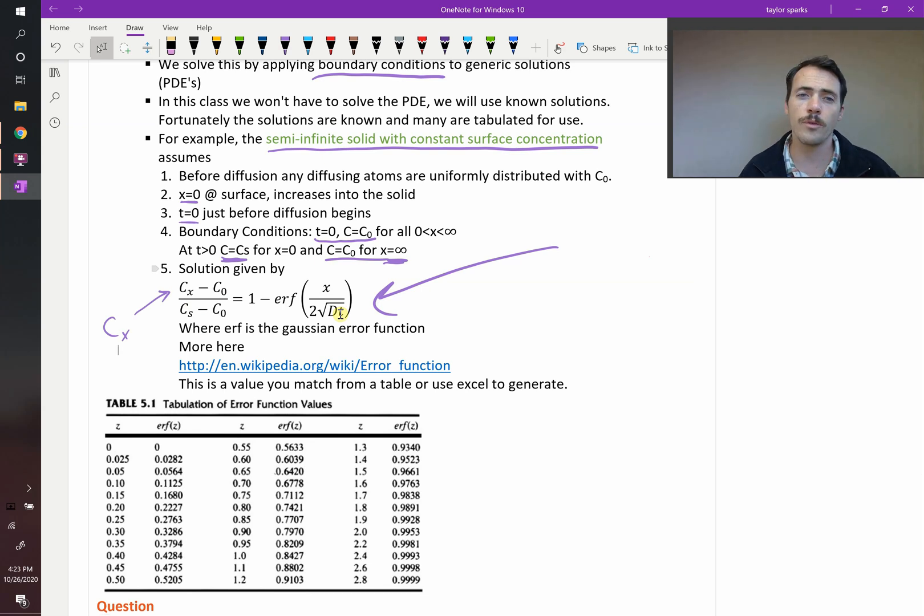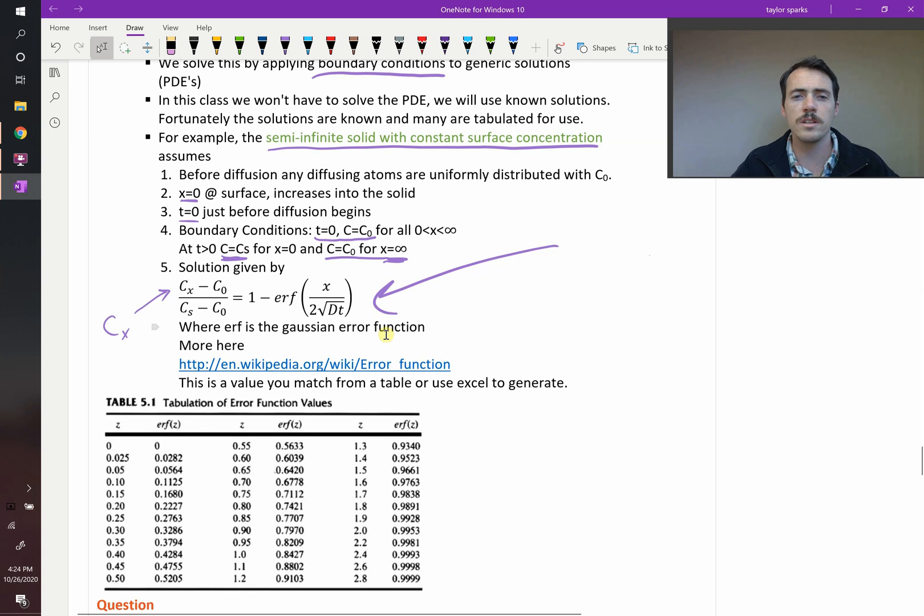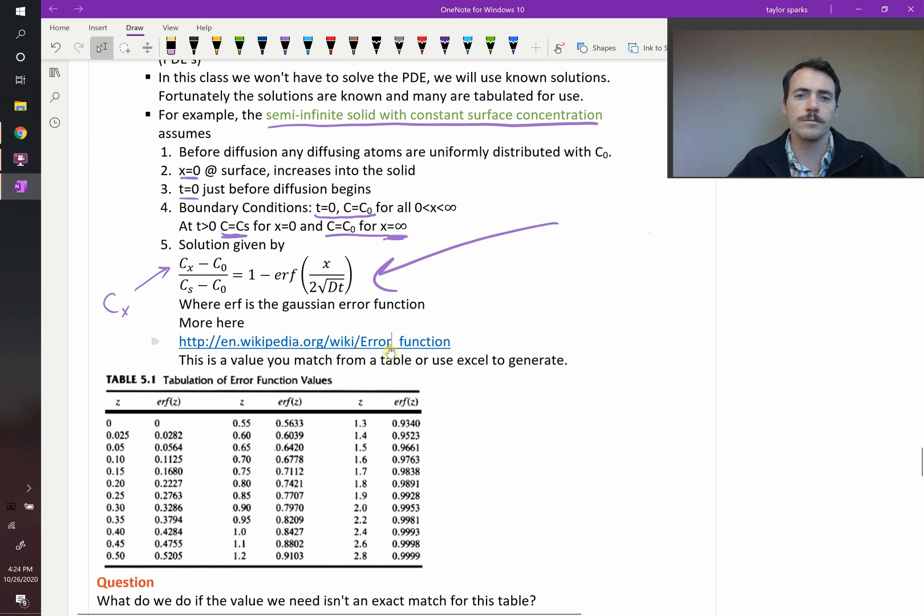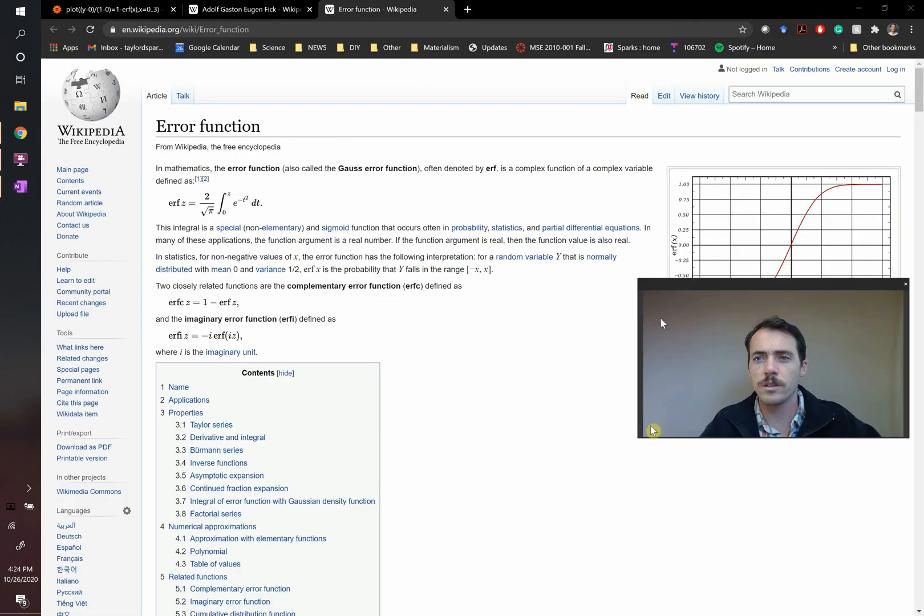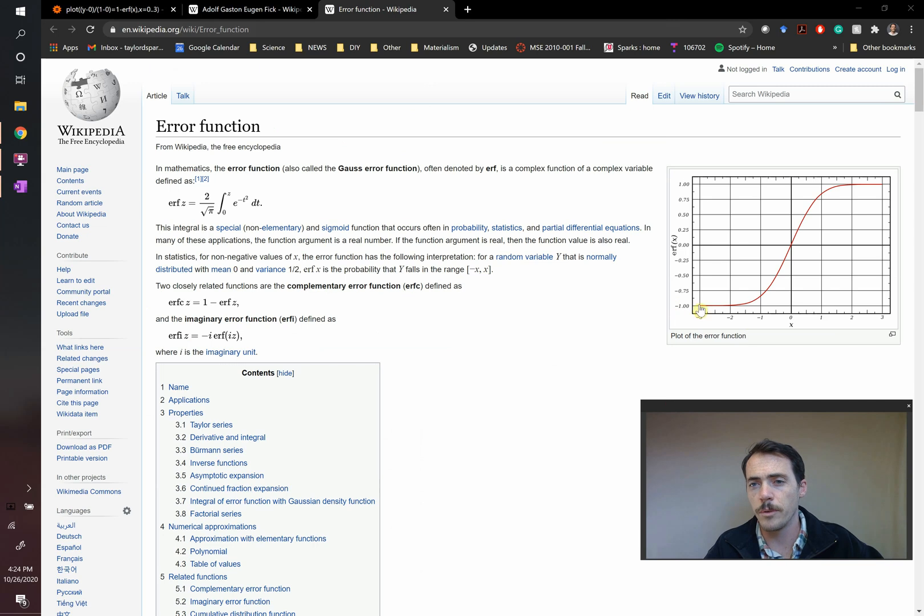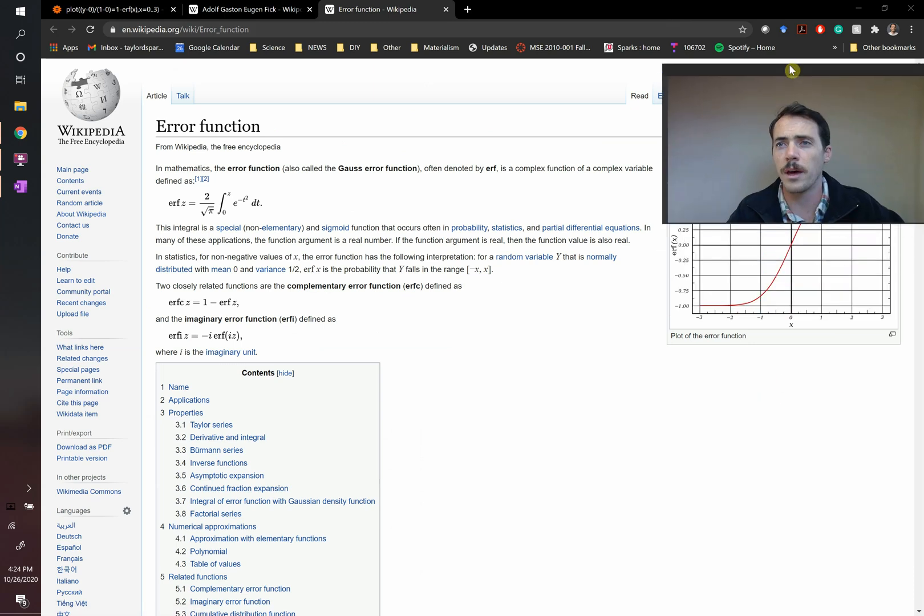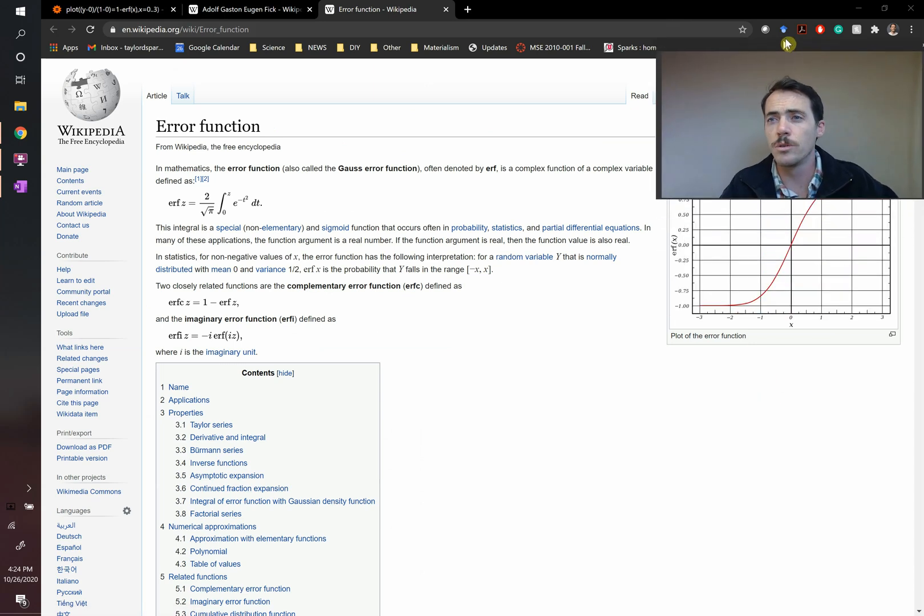You might not have used the error function before. If you haven't, you can read more about it here at this link on Wikipedia. But essentially what it is, it's a function that looks like this. It goes from negative 1 up to positive 1, as you go from about negative 3 to positive 3, but it sort of tails off here at these ends. This just happens to look a lot like the actual diffusion coefficients that we observe in nature, and that's why they use this mathematical function. You could use others, that's just the one that they use for this one.